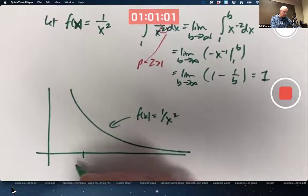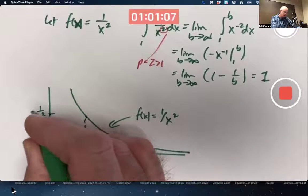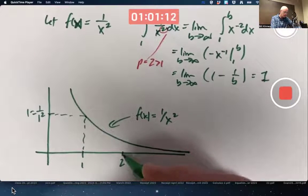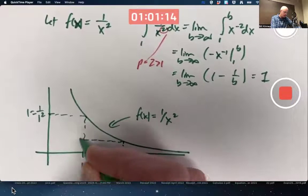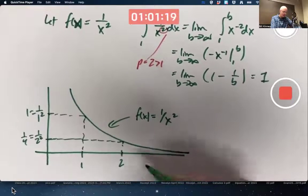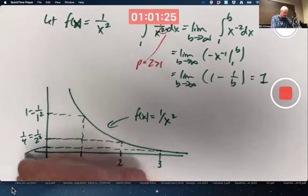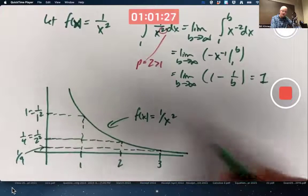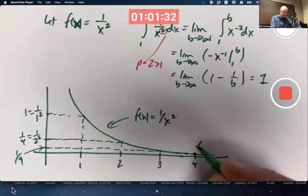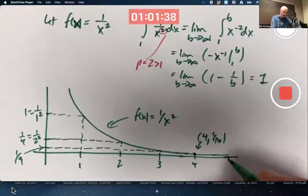We know at x equals 1, this function is 1 over 1 squared, which is 1. At x equals 2, the value of the function is 1 over 2 squared, which is 1 fourth. At x equals 3, the value is 1 over 3 squared, which is 1 ninth. At x equals 4, the value of the function is 1 16th. At 5, it's 1 25th, etc.